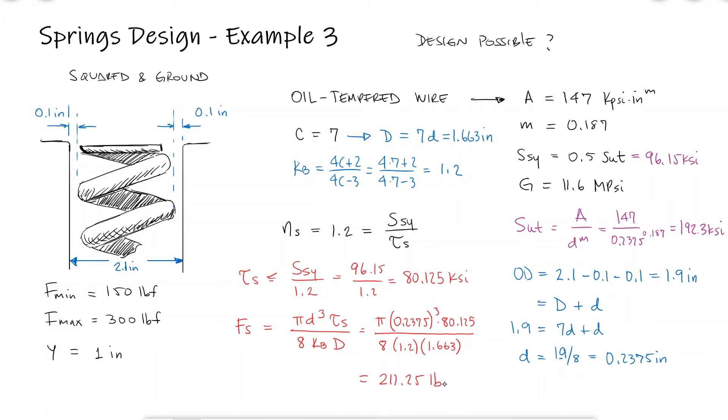This is the force required to bring the spring to its solid length, so it would be impossible to subject it to a fluctuating force that goes from 150 to 300 pounds.